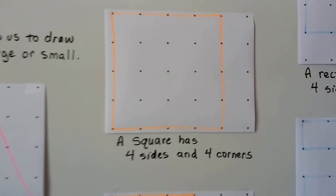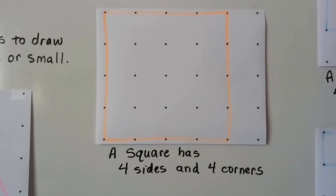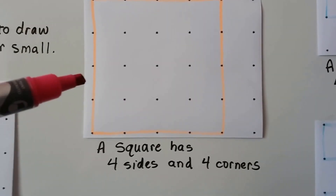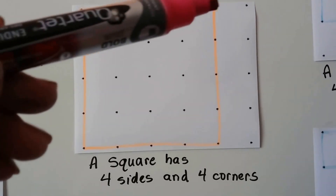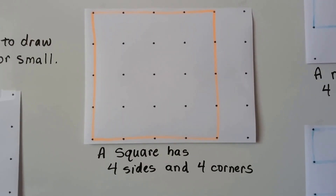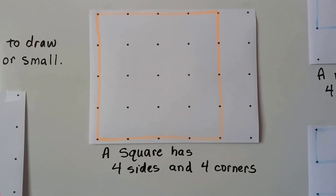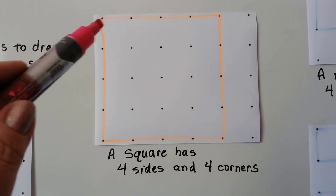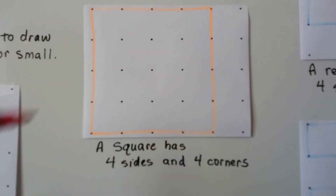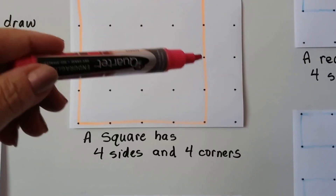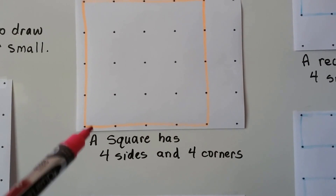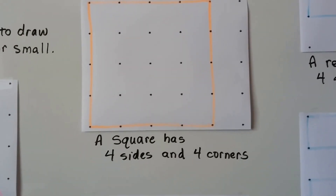A square has four sides and four corners: one side, two, three, four sides, and one, two, three, four corners. All the sides are the same length. I had to go one, two, three, four dots across and one, two, three, four dots down for every side, and then they were the same length.